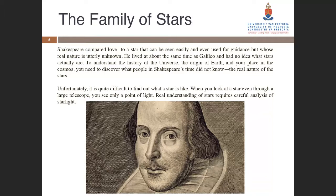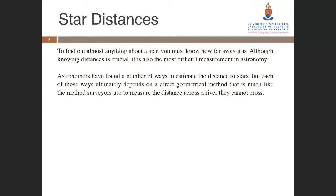Unfortunately it is quite difficult to find out what a star is like. When you look at a star even through a large telescope, you see only a point of light. Real understanding of stars requires careful analysis of starlight. To find out almost anything about a star you must know how far away it is. Although knowing distance is crucial, it is also the most difficult measurement in astronomy. Astronomers have found ways to estimate the distance to stars, but each ultimately depends on a direct geometrical method like the method surveyors use to measure distances across a river they cannot cross.